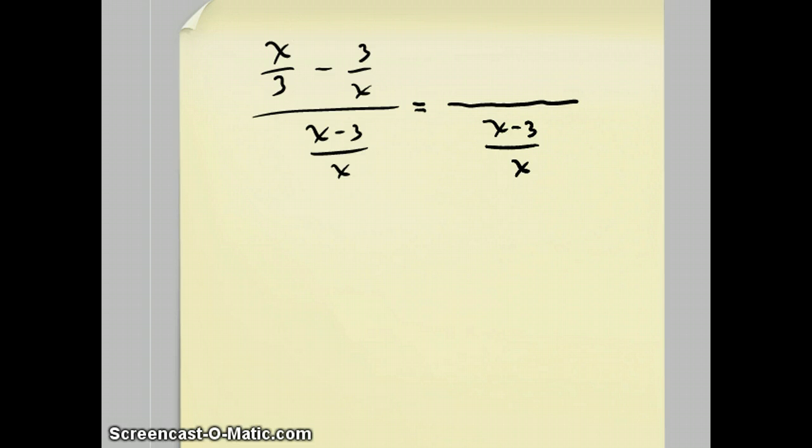For the top, I'll get common denominators. The common denominator is 3x, because you just multiply the two denominators together. So when you multiply, to turn this into 3x, I have to multiply top and bottom by x. So I get x squared over 3x. And for this one, I want the common denominator to be 3x. So multiply top and bottom by 3. End up with that. Now, you divide fractions by multiplying the numerator by the reciprocal of the denominator.